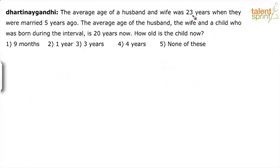The average age of a husband and wife was 23 years when they were married 5 years ago. The average age of the husband, the wife and the child who was born during the interval is 20 years now. How old is the child now?